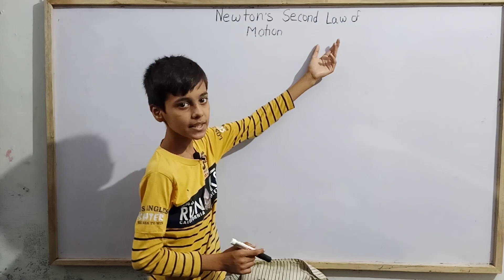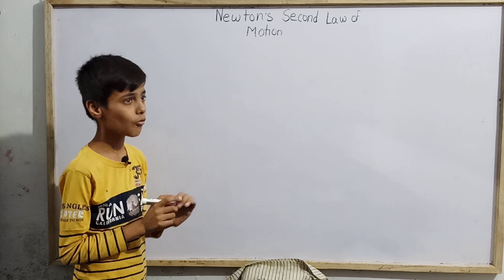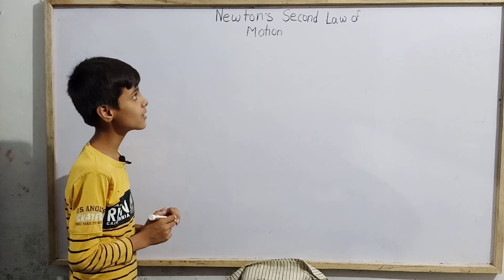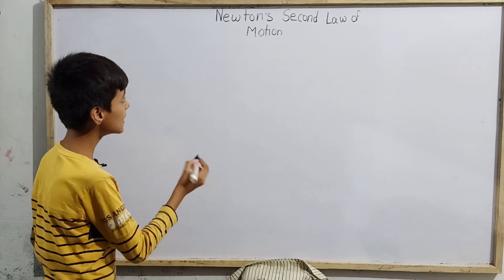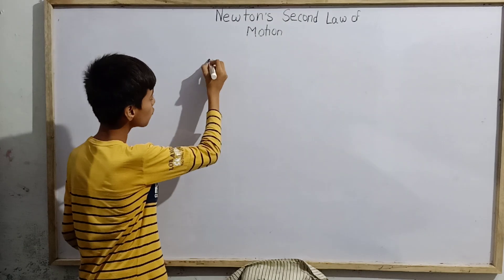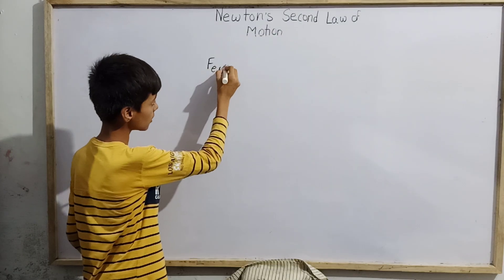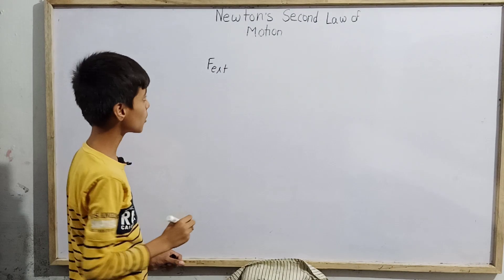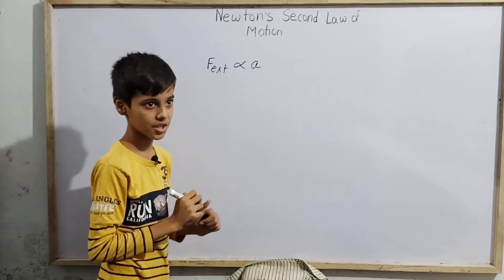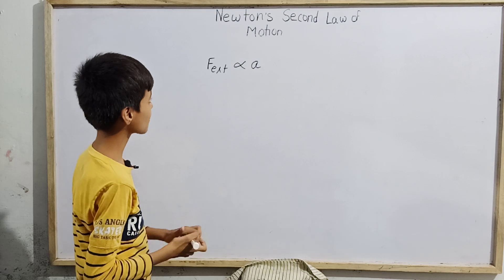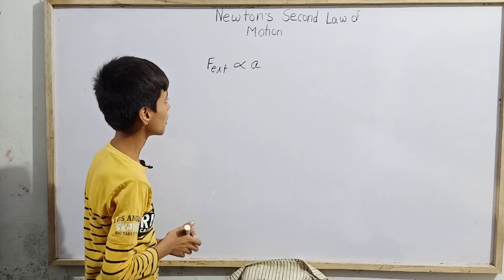Every law in physics has its own statement. So what is the statement of Newton's second law of motion? The main statement is that any external force applied on any body is directly proportional to the acceleration of the body, and also directly proportional to the mass of the body.